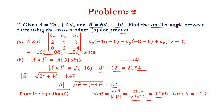Our question is to find the smaller angle between A and B, so we need theta. Theta is sine inverse of 0.668, which is 41.9 degrees. This completes the cross product method.